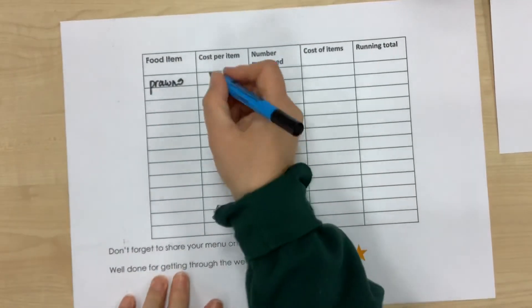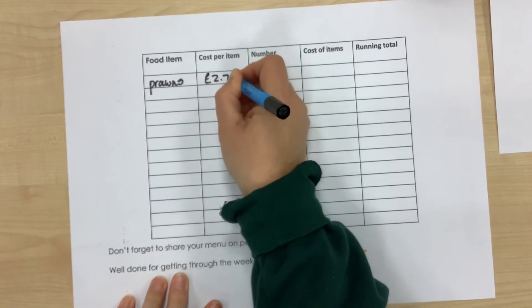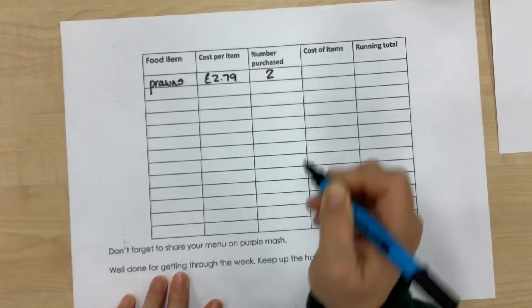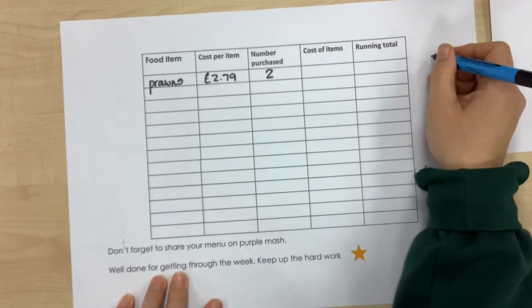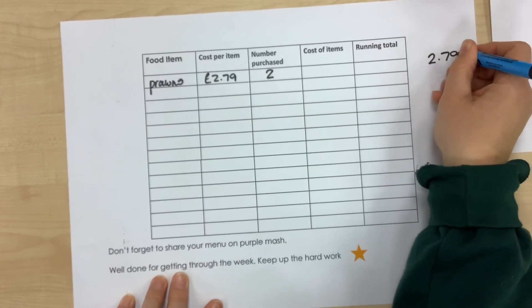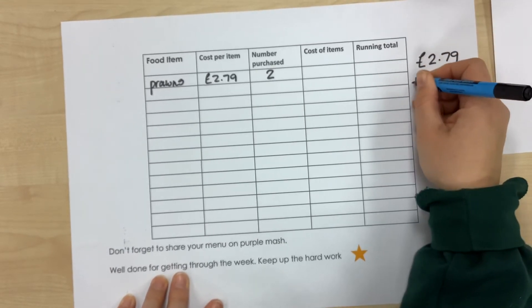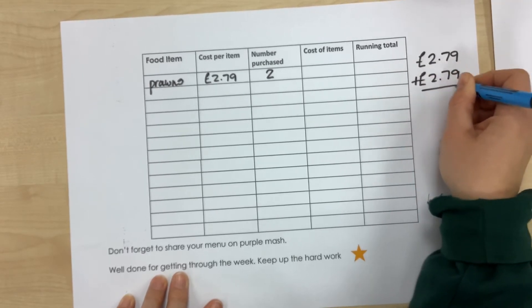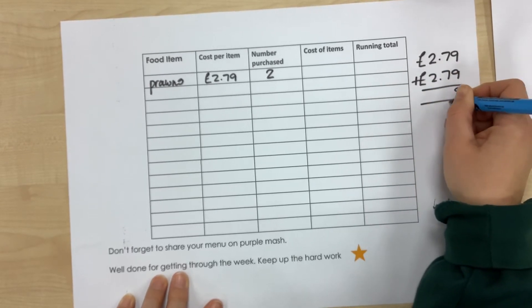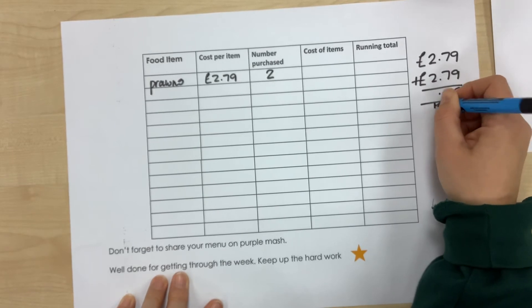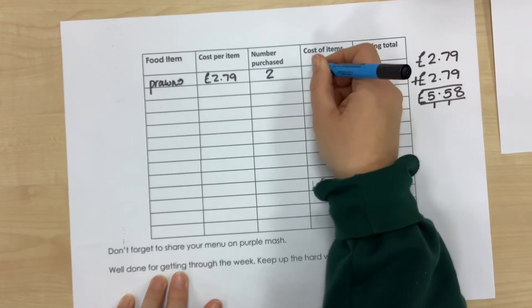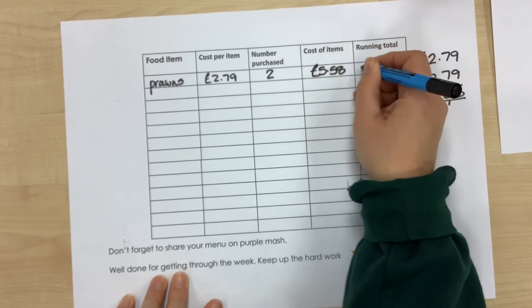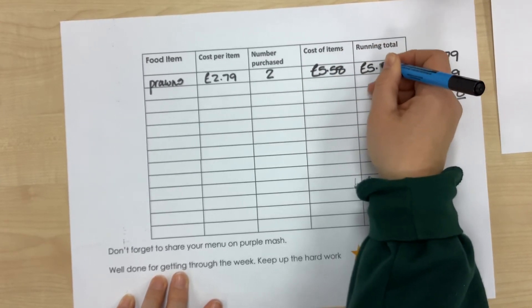So they are £2.79 per packet, but I'm going to buy two packets. So the cost of the two items, and I'm going to do some workings over here, £2.79 plus £2.79—you might need to have some more scrap paper to help you do your workings—is £5.58. So the cost of both of those items is £5.58, and so far I have spent £5.58.